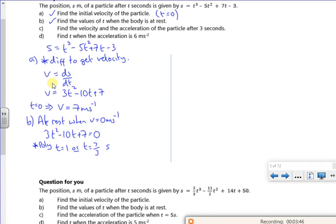Part c says, find the velocity and the acceleration after 3 seconds. So I'm just going to ignore that line in the middle there. So I'm okay with the velocity. The velocity at t is 3. So it's going to be 3 lots of 3² - 10 lots of 3 + 7. So what's that? 27 minus, 27 + 7 is 34. Minus 30 gives me 4 meters per second.